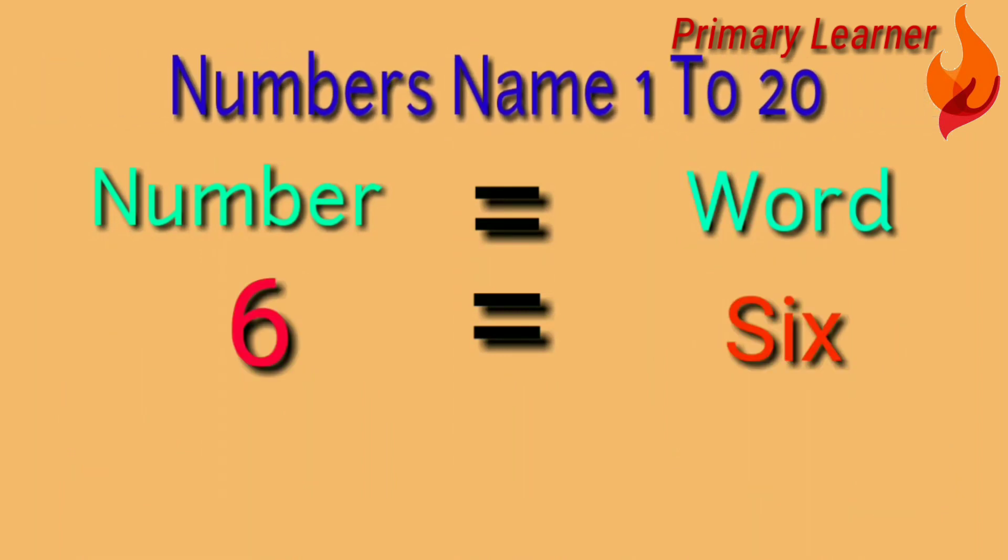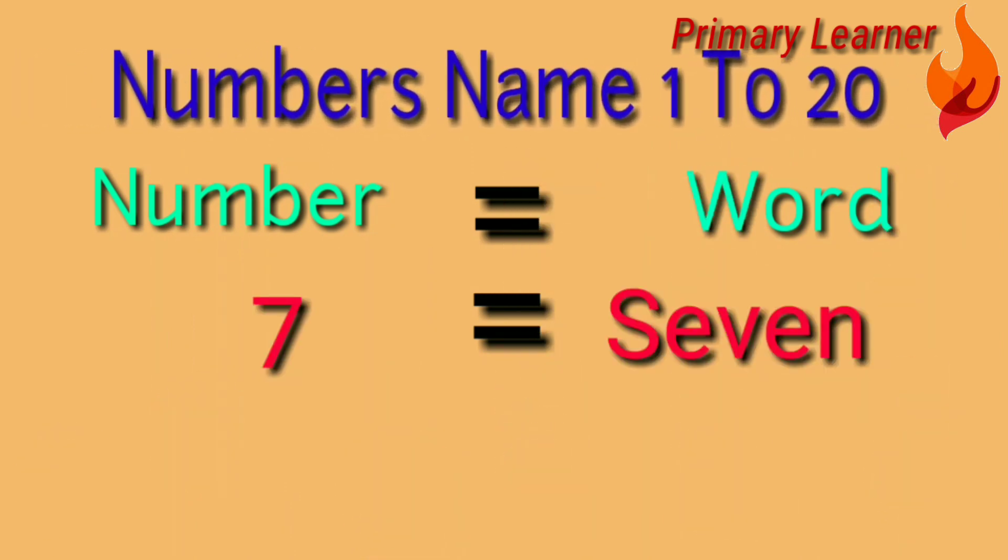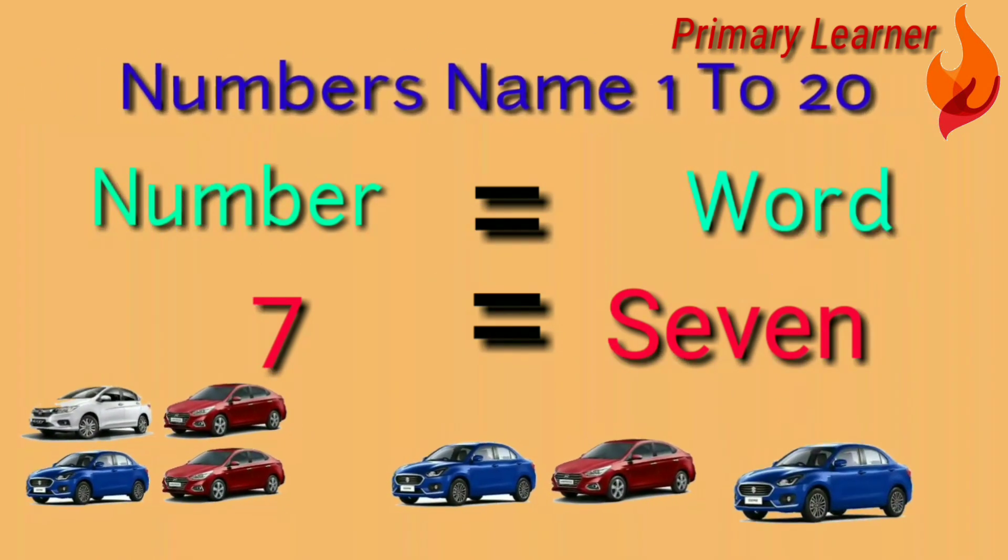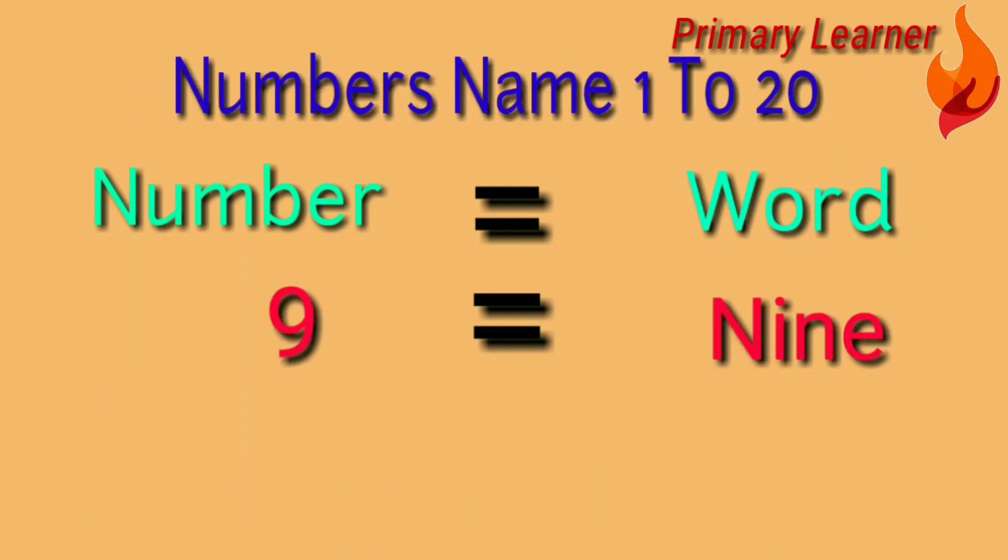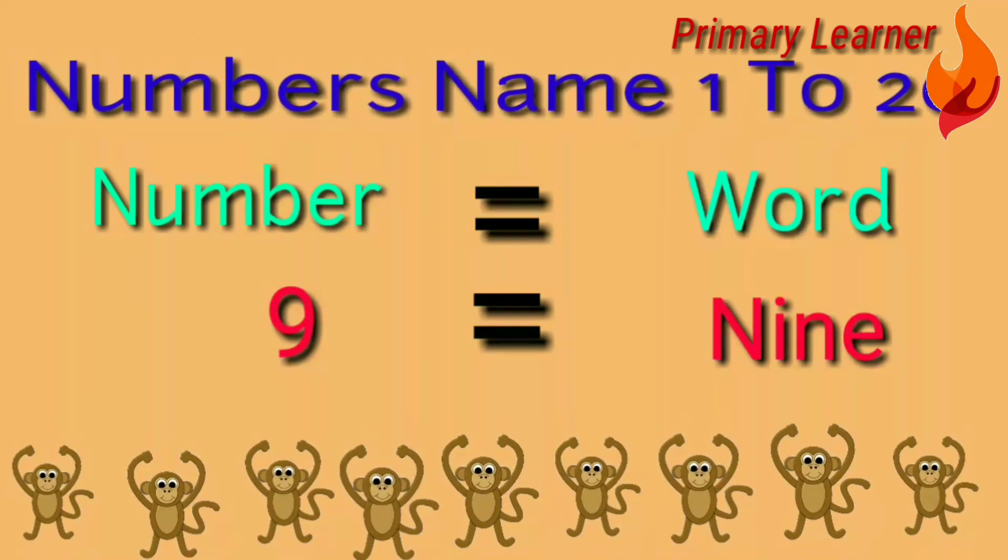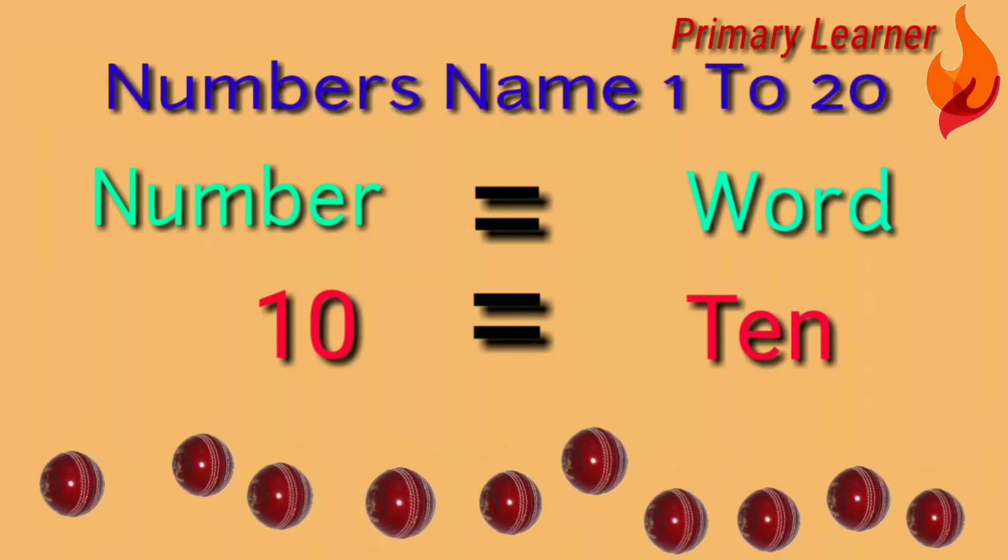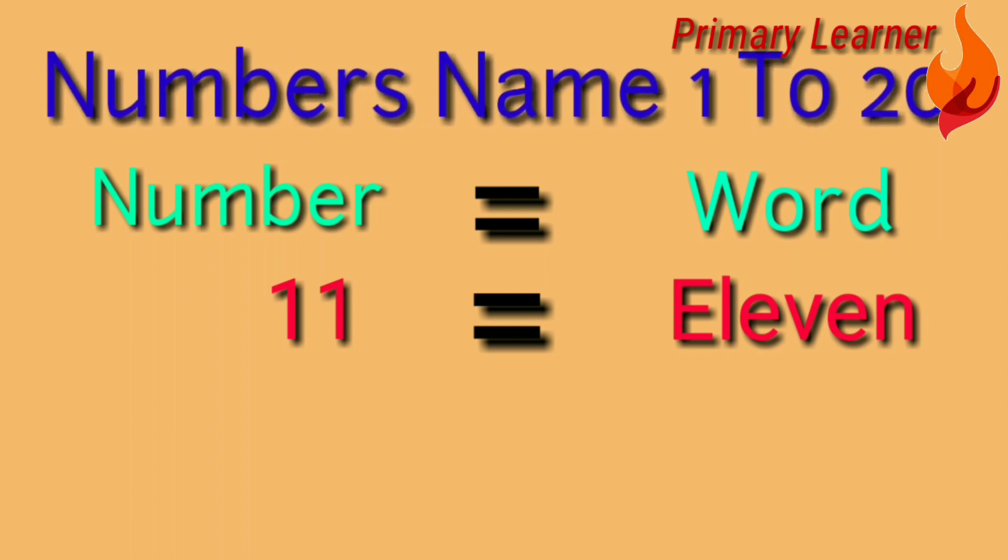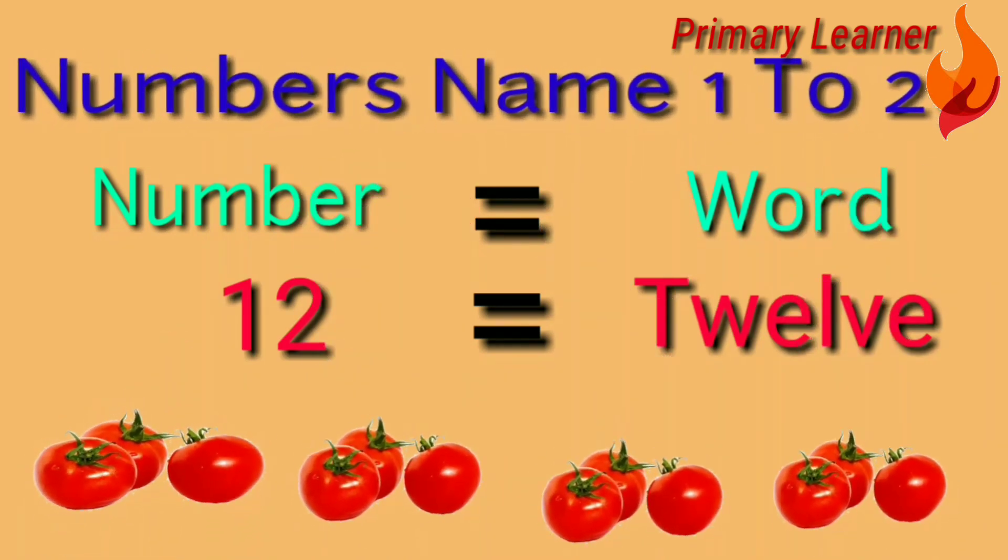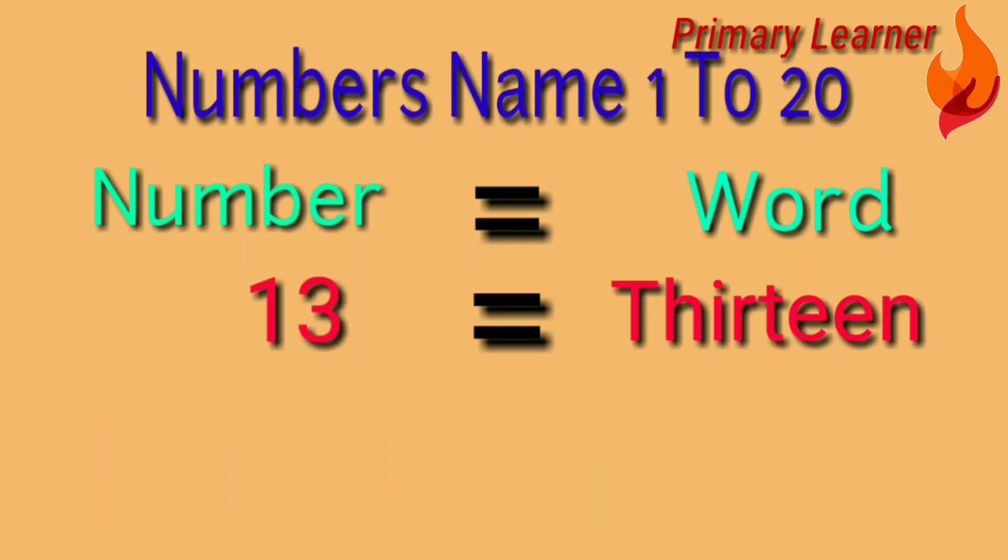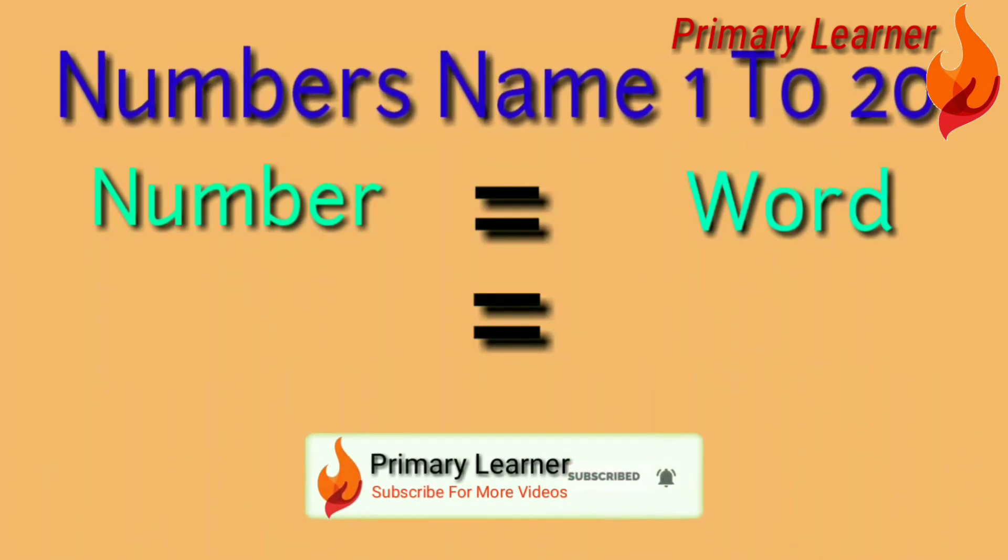6 - S-I-X. 10 - T-E-N, 10 cricket balls. 11 - E-L-E-V-E-N, 11 cars. 12 - T-W-E-L-V-E, 12 tomatoes. 13 - T-H-I-R-T-E-E-N, 13 ice creams.